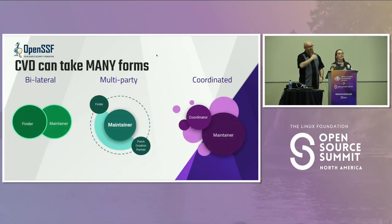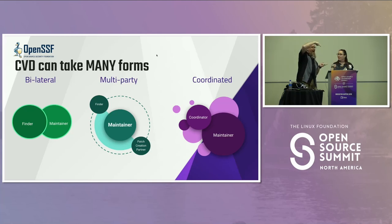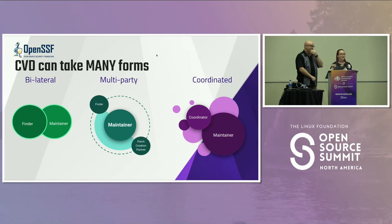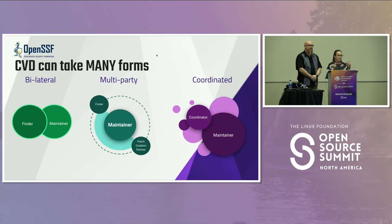CVD can take a number of different forms. There is bilateral coordinated vulnerability disclosure — two parties, the reporting party and the receiving party, working together with nobody else involved. That happens less and less often, especially in open source, where very rarely is there only one party who needs to be notified. What happens more often is multi-party vulnerability disclosure, where a number of other stakeholders are involved — one-to-many or even many-to-many. CVD aims to bring together everybody who needs to be involved as early on as possible.